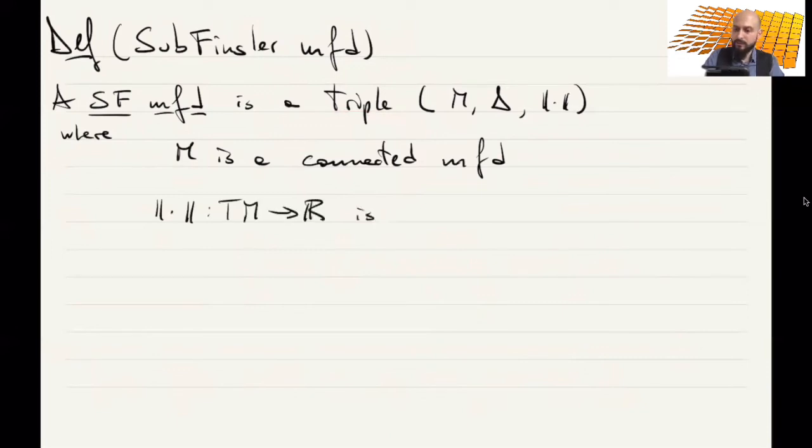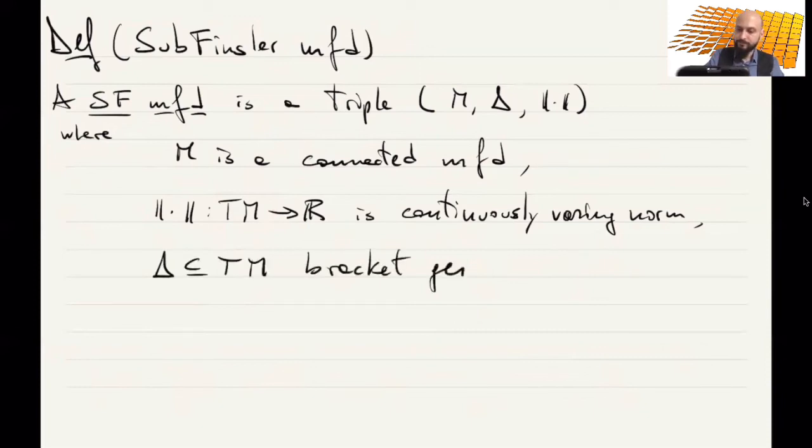So what is a Sub-Finsler manifold? A Sub-Finsler manifold, which we'll also call a Carnot-Carathéodory manifold, or just CC manifold, or CC space, is a triple (M, delta, norm), where M is a connected manifold.